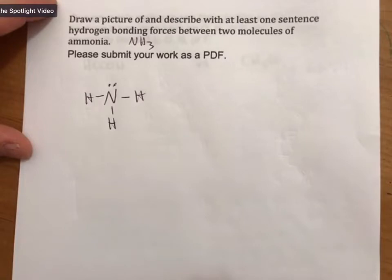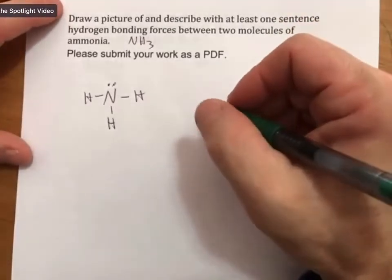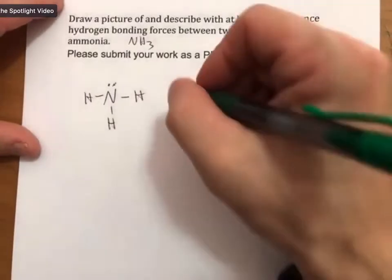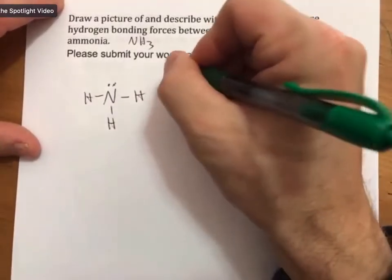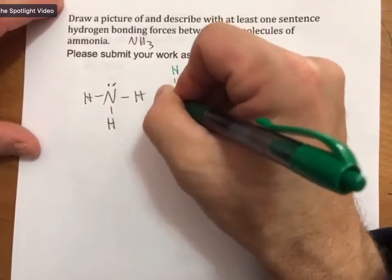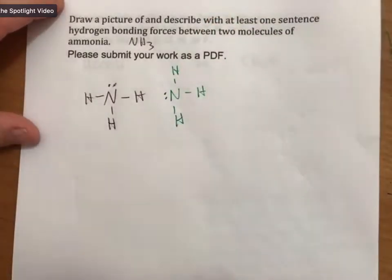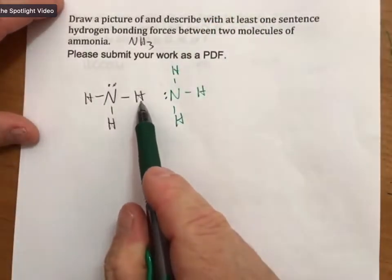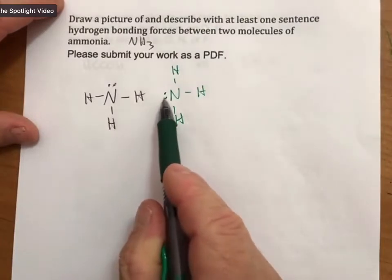Because what I'm going to do here is I'm going to draw two separate ammonia molecules. And I'm going to draw the hydrogen on one of them closest to the pair of electrons on the other one.